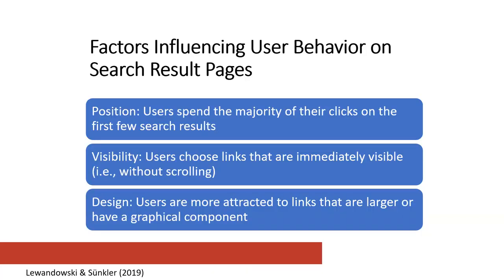Some factors that influence user behavior when they're on search result pages. There was an article by a couple of authors who did a literature survey of what research had been done on how users behave when they're on these search pages. They basically came up with three key factors that influence, out of those search results, what gets clicked and what doesn't.